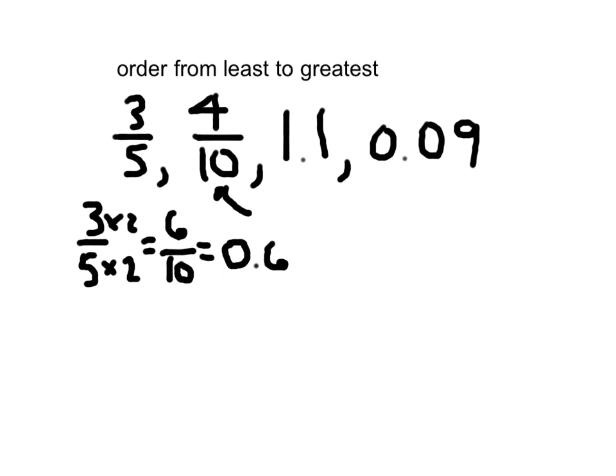Now for this one, since the denominator is already 4 — well, if the denominator is 10 and the numerator is 4, we can just write it as 0.4. Now we've got 1, 2, 3, and 4 decimals.